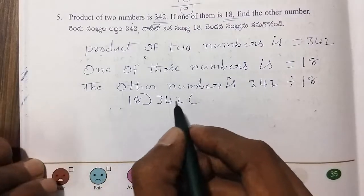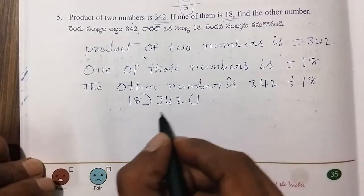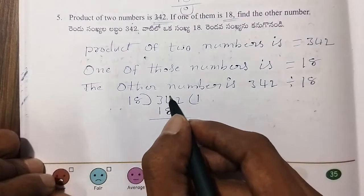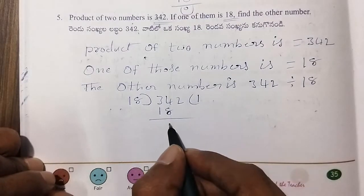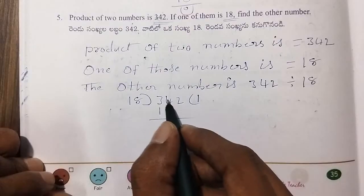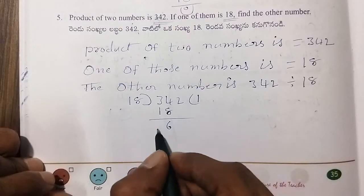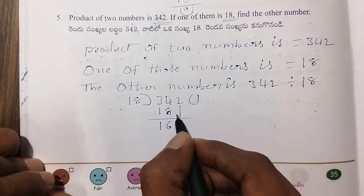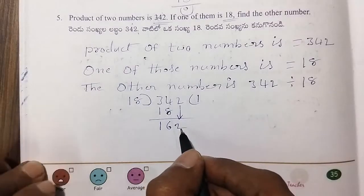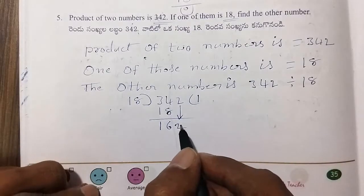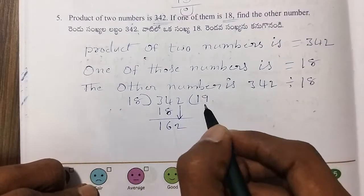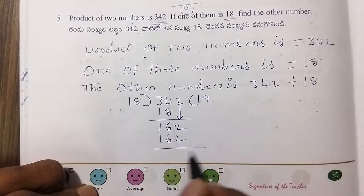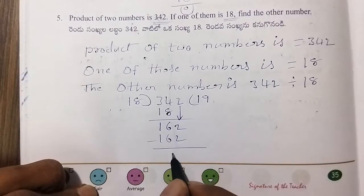Let's see: 18 — one of the numbers is 18. Working through the division: 342 divided by 18. The result is 19.